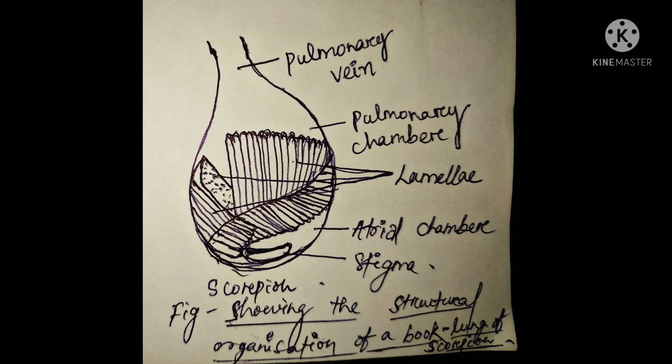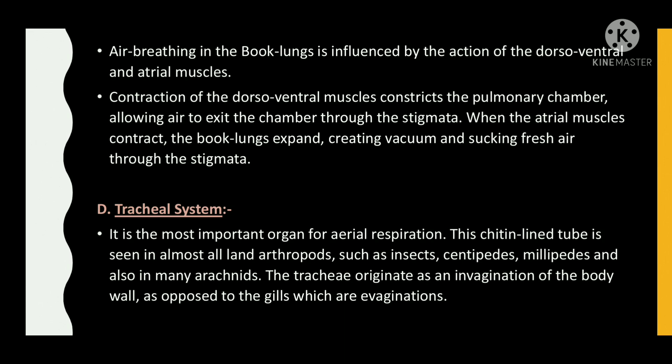The figure shows the structural organization of a book lung of scorpion. Air breathing in the book lungs is influenced by the action of the dorsal-ventral and atrial muscles. Contraction of the dorsal-ventral muscles constricts the pulmonary chamber, allowing air to exit through the stigmata. When the atrial muscles contract, the book lungs expand, creating a vacuum and drawing fresh air through the stigmata.